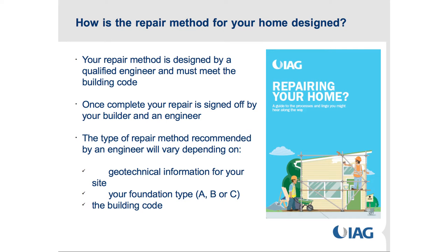The type of repair recommended by the engineer varies depending on the geotechnical information for your site. Site-specific geotechnical engineering is done, and then a structural engineer uses that to design whatever foundation repair needs to be done. Your foundation type also matters - there are Type A, B, and C foundation types. Type A is piles with no ring foundation, Type B is piles with a concrete ring foundation, and Type C is a concrete slab foundation.